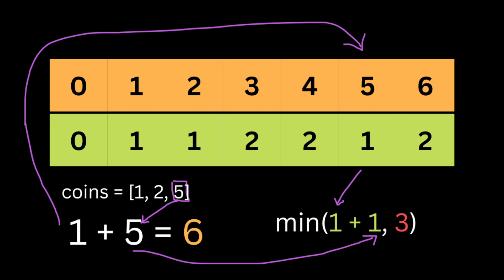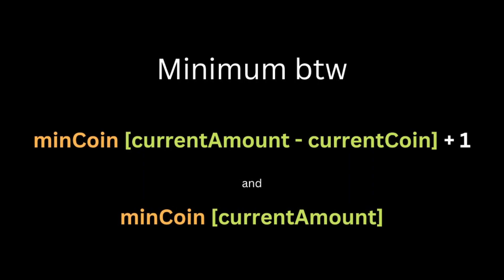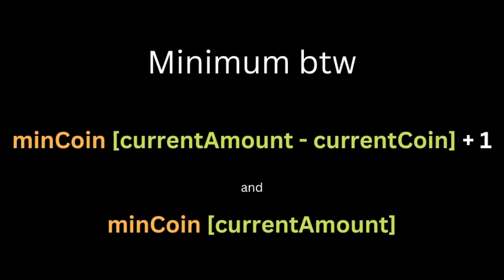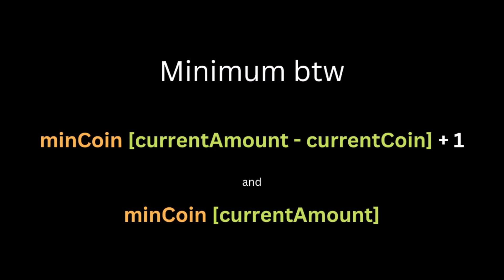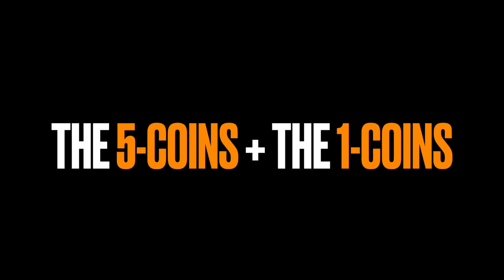Now let's look at the coin of value five. From amount zero, we need only one coin of value five to make amount five. For amount six, the minimum number of coins is two. The pattern is: the first argument to the minimum is dp[current_amount minus current_coin] plus one, and the second argument is the existing value dp[current_amount]. For example, for amount seven using coin two: seven minus two equals five, dp[5] is one, so we need one coin of value two — result is two coins total.